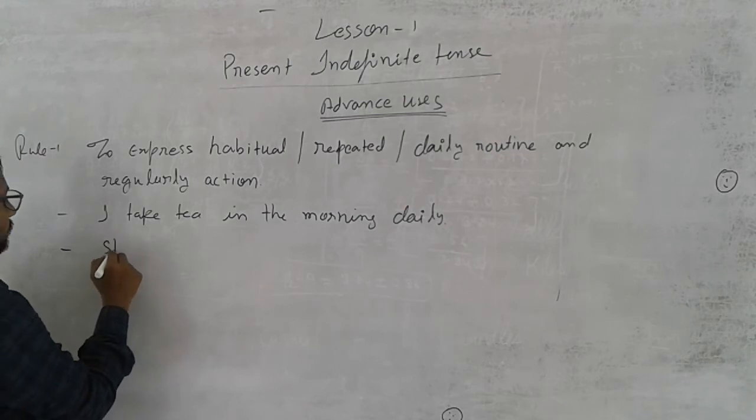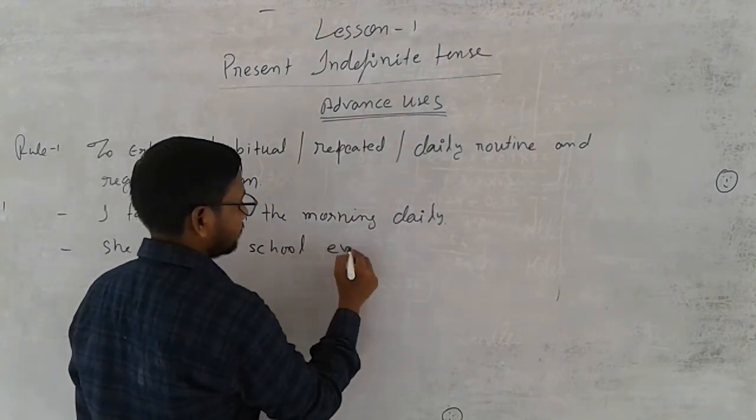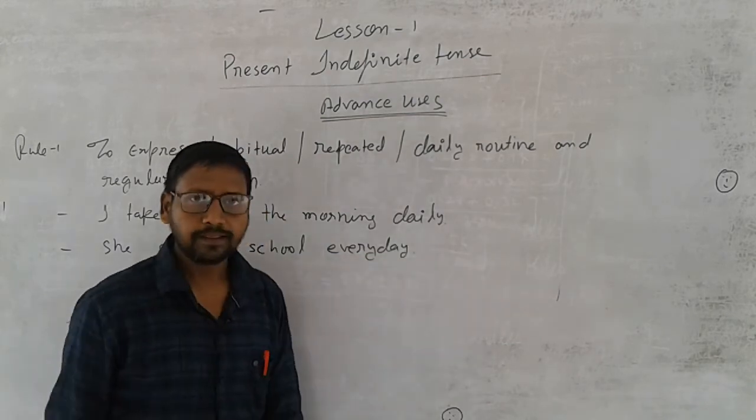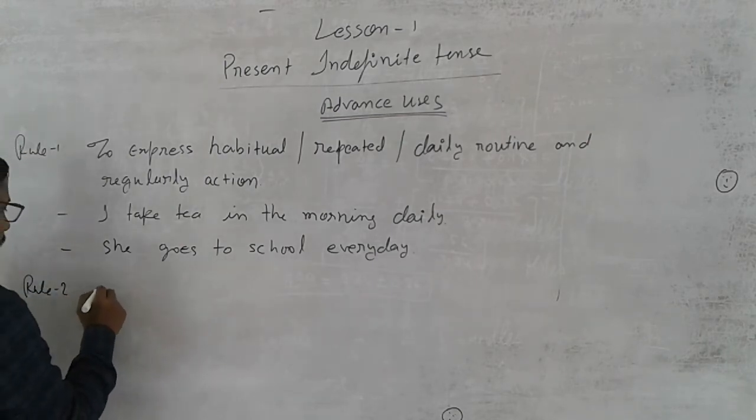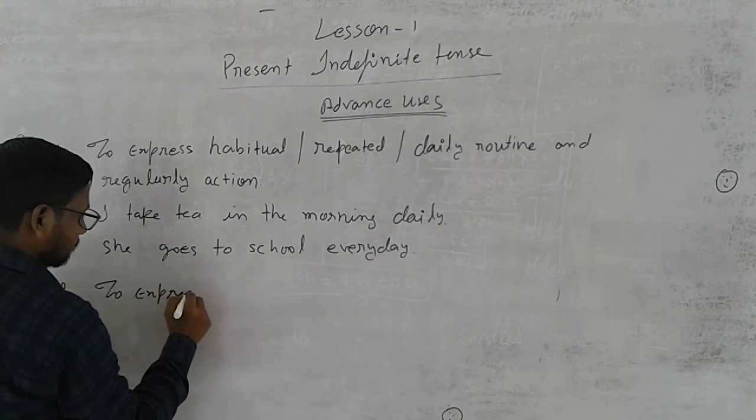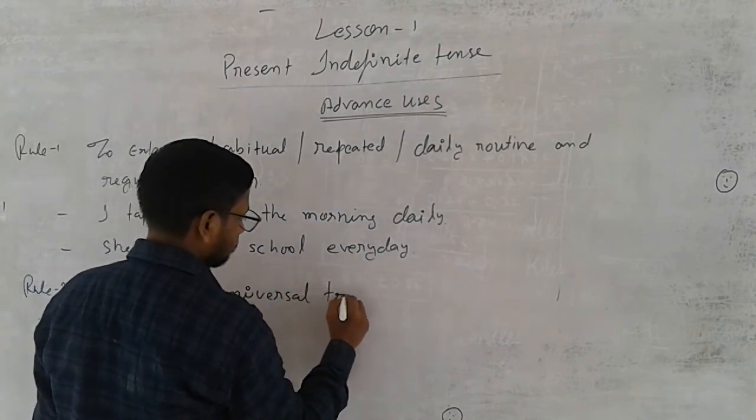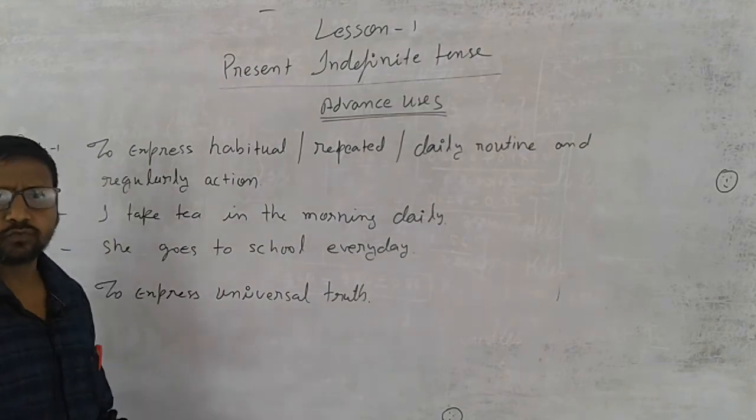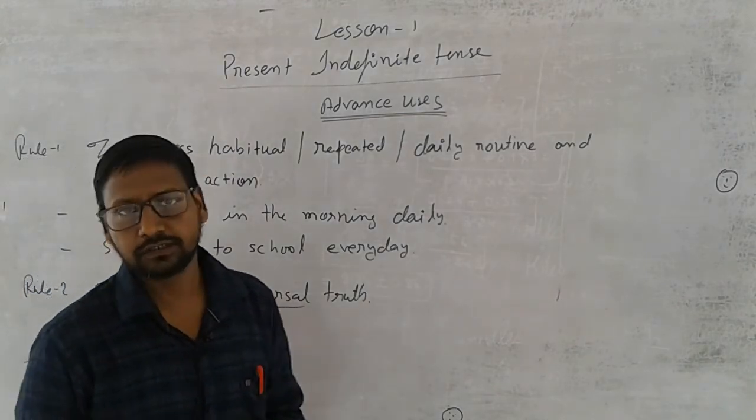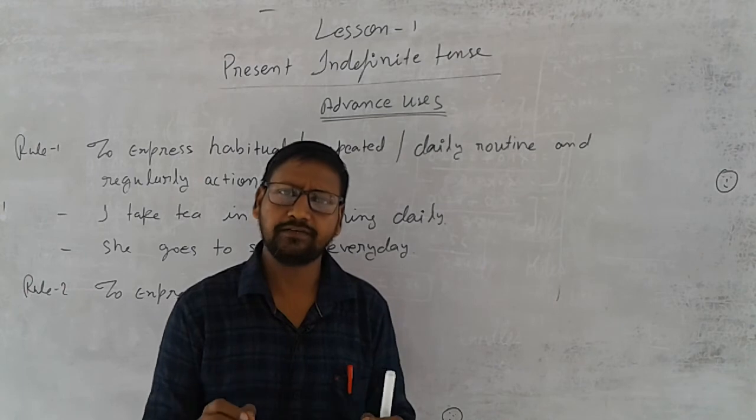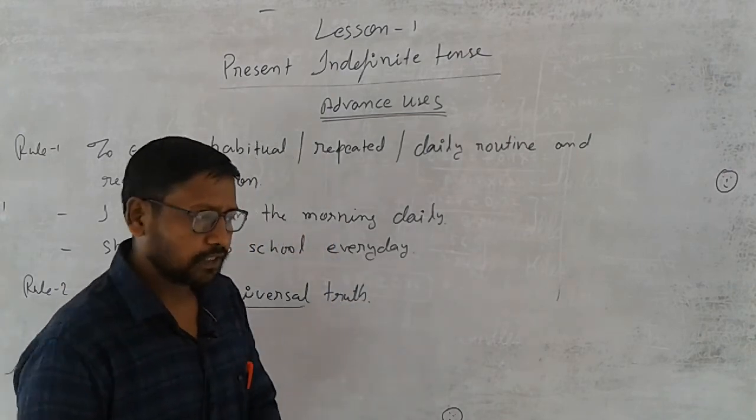Let's see the next rule. Rule number second is to express universal truth. What's the meaning of universal truth? Universal truth which is only one in the world, or it happens in the world anywhere, a single time. It happens a single time but daily. Suppose if I tell you: the sun sets in the west, or the sun rises in the east - both are universal truths.